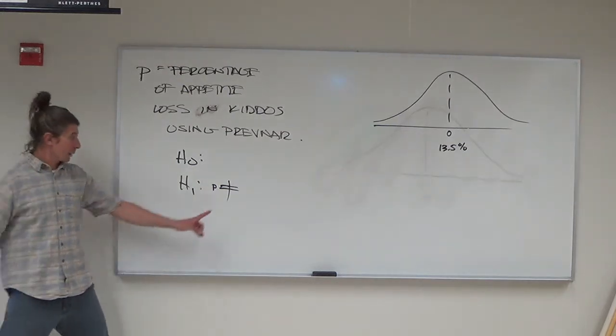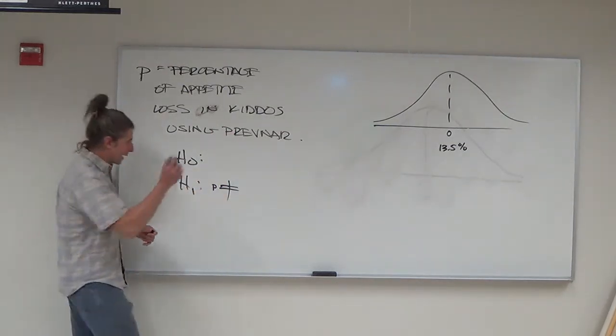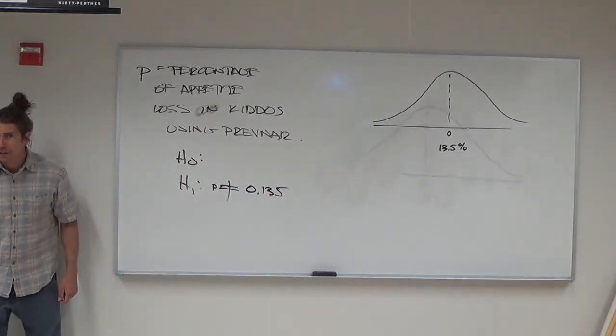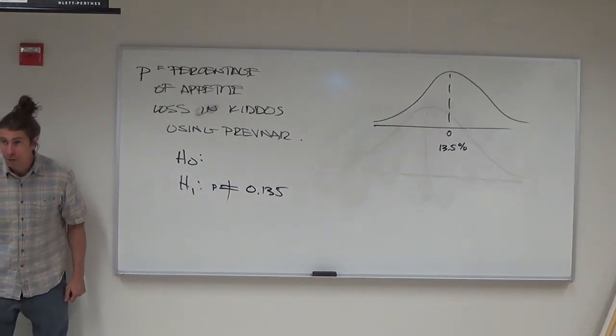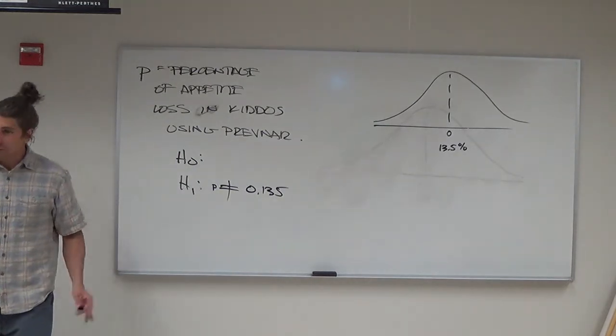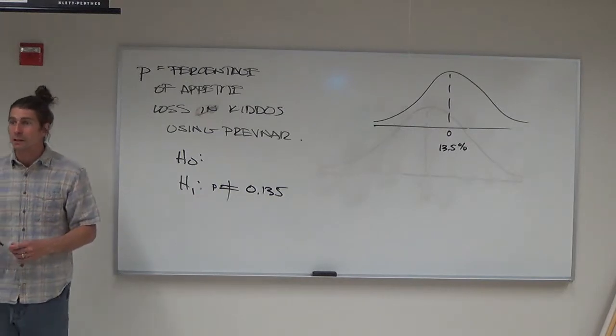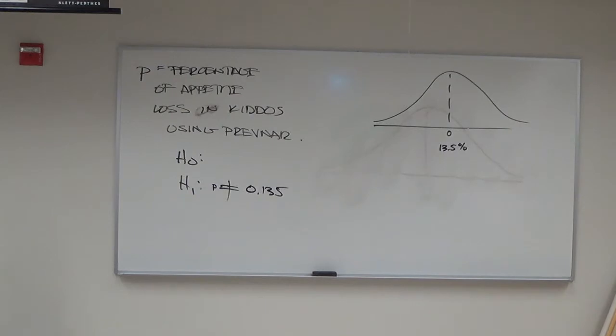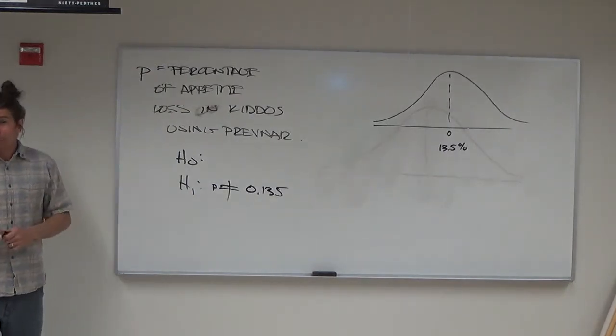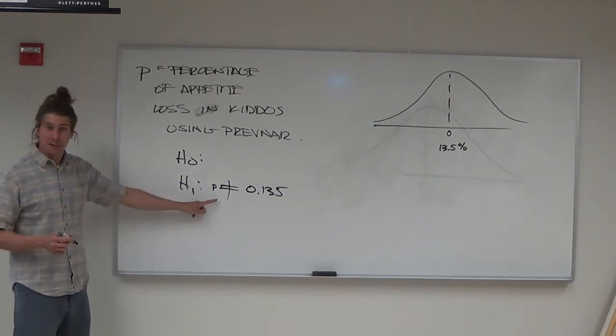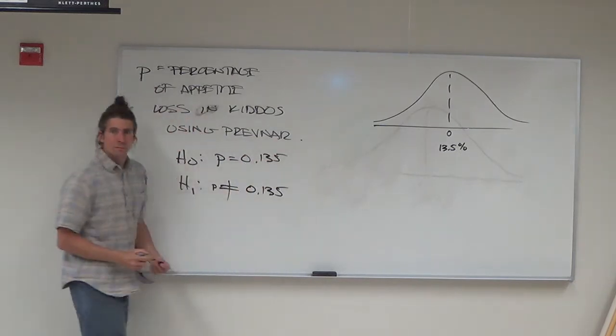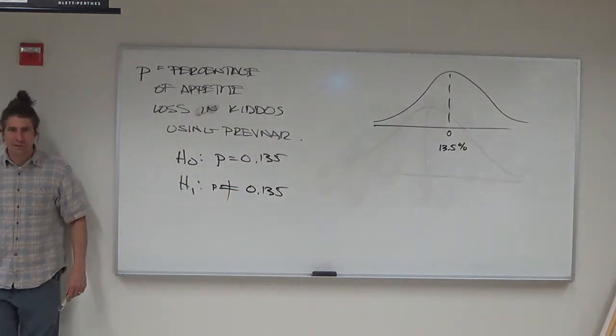The instructor confirms the number that goes in the hypothesis: 0.135. They write it and ask if it's okay, noting they could also write it as 13.5%. They explain you can't put a percentage into the calculator - you have to use decimal form. For the null hypothesis, it's a pure equals sign because the opposite of does not equal is equal.